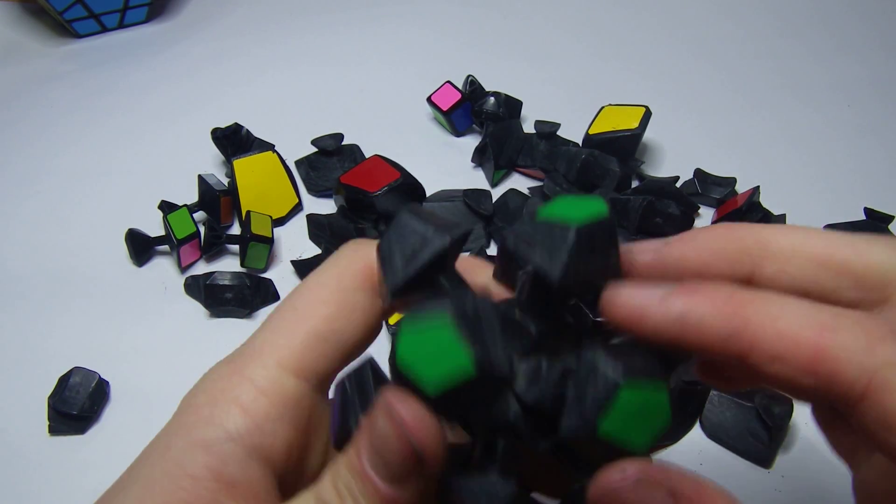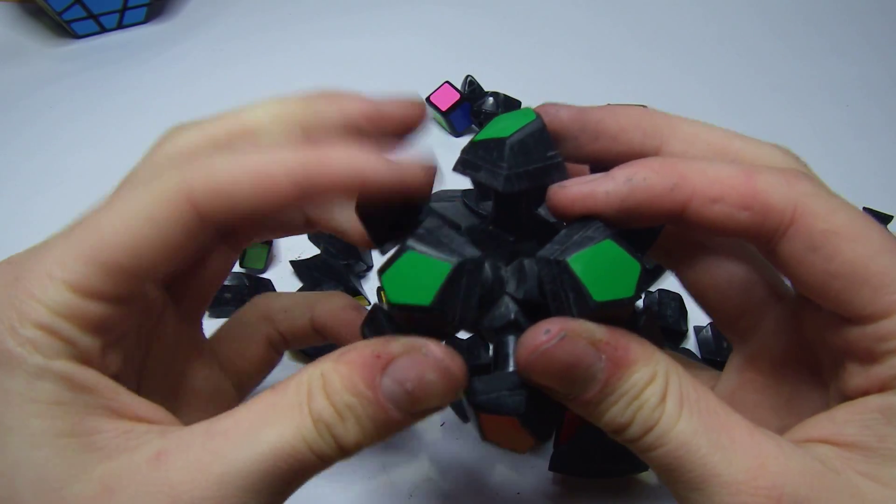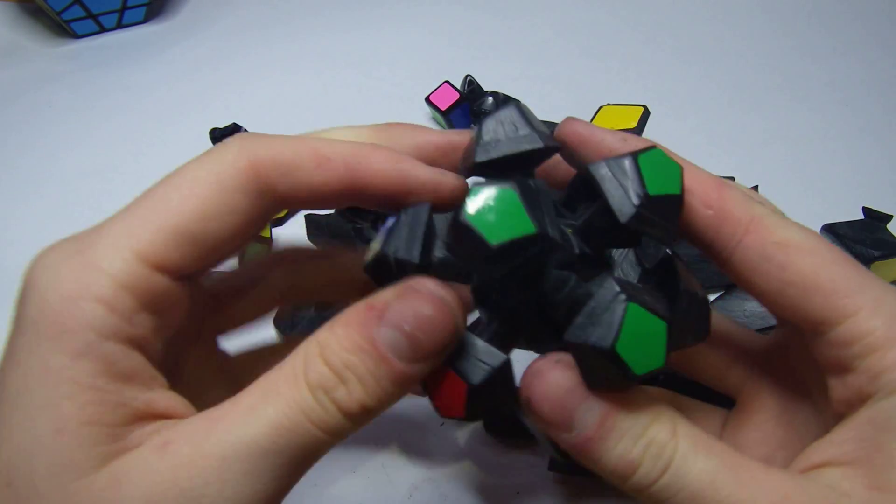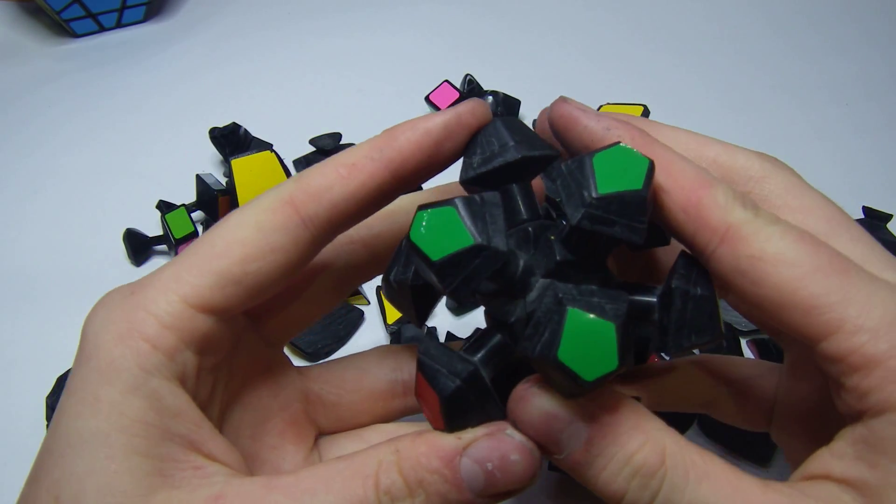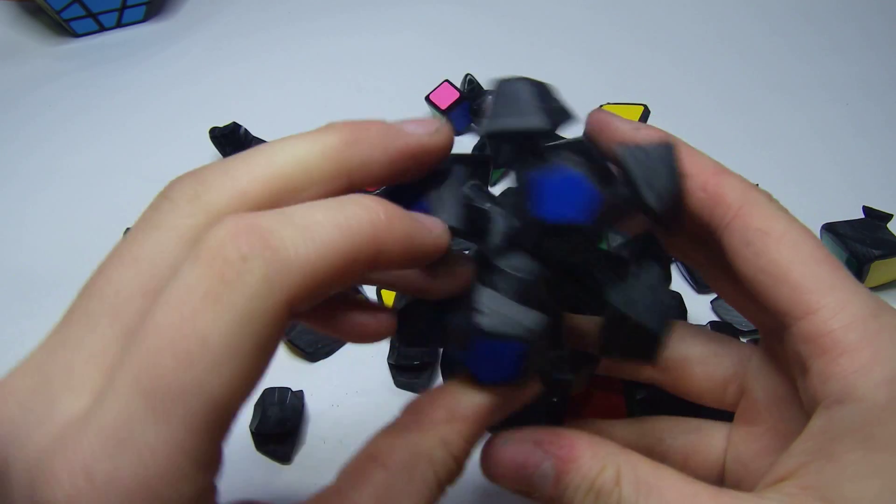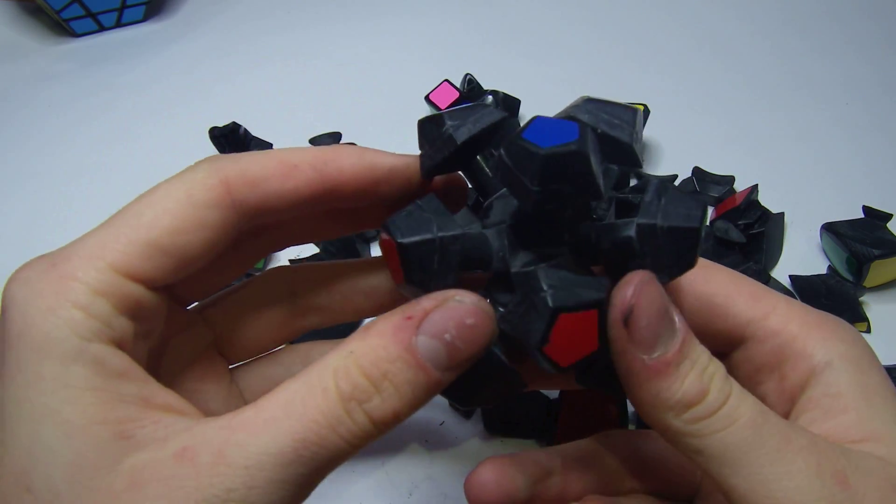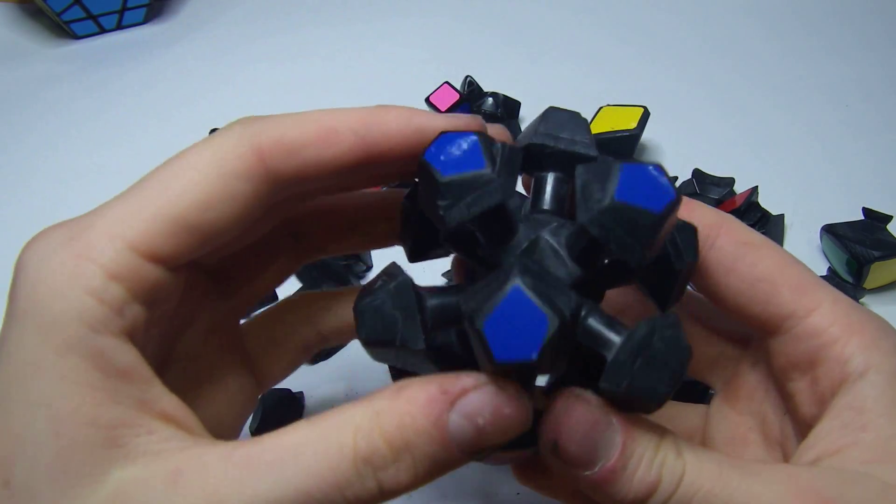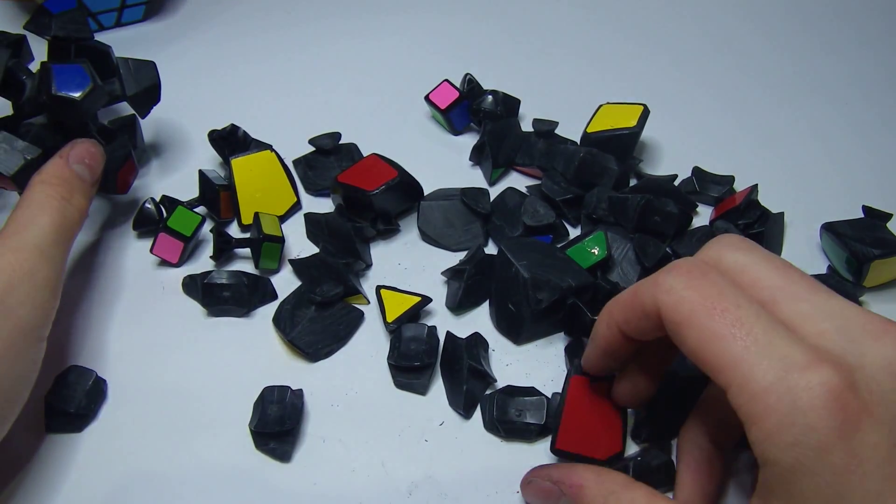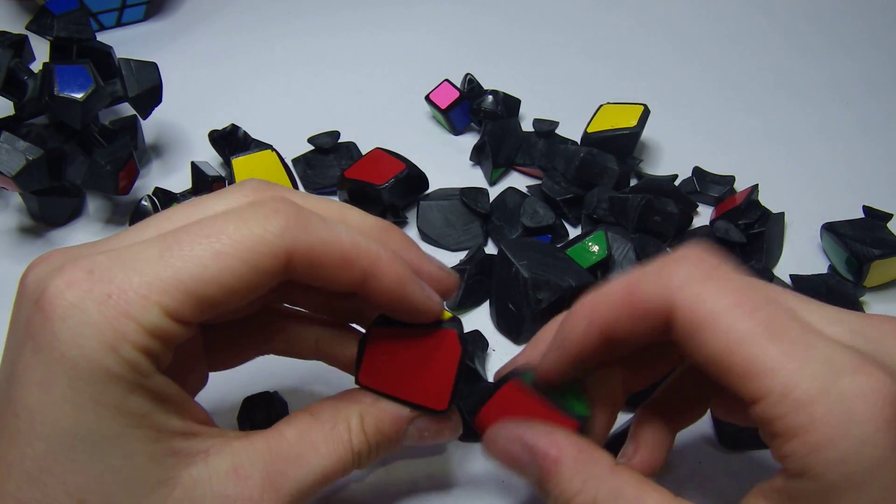But yeah, you can really see how three centers here combined to make one face. Like that. And then other three centers combine. And then they make a face and you can kind of see the pillowing here, how that works. And then yeah, let's find some mirrors.